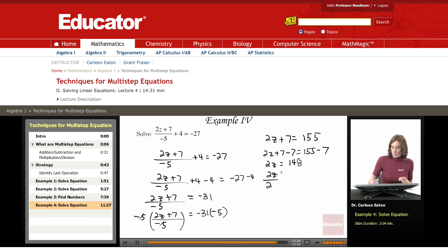Because we had 2z, so I'm going to divide both sides by 2. And that's 148 divided by 2. The 2s cancel out on the left side, and the final answer is z equals 74.